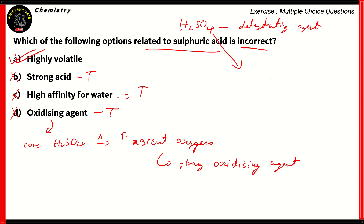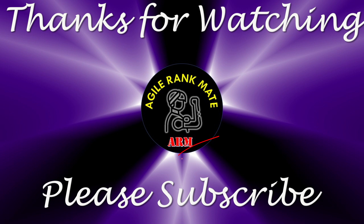The fact is that sulfuric acid is less volatile than other acids such as hydrochloric acid and nitric acid. So option A — highly volatile — is incorrect. The term volatility refers to the boiling point: if you have a low boiling point, then the substance is considered highly volatile. That concludes this episode of ICAR training. We hope you found this episode interesting. For more useful and interesting content, don't forget to subscribe to Agile Rank Mate, your partner in education. Hit the bell icon for the latest updates. Until the next webisode — take care, stay alert, bye-bye for now.